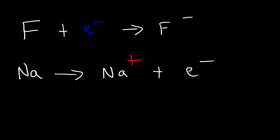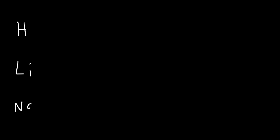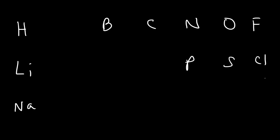So now what is the trend with electronegativity? How does it change as you move across the periodic table? Let me give you some values for hydrogen, lithium, sodium, boron, carbon, nitrogen, oxygen, fluorine, and some other elements like phosphorus, sulfur, chlorine, bromine, and iodine.